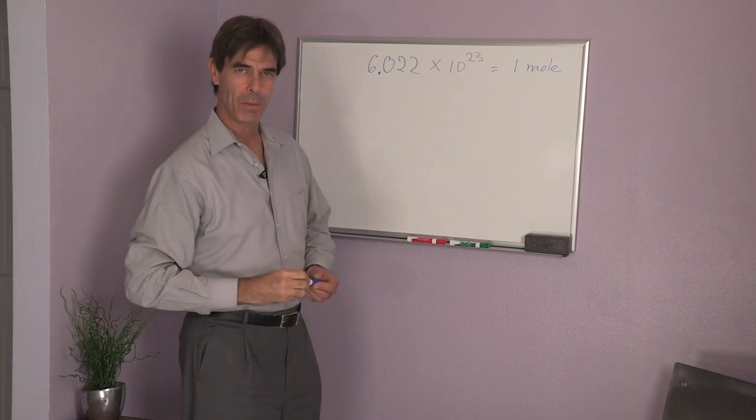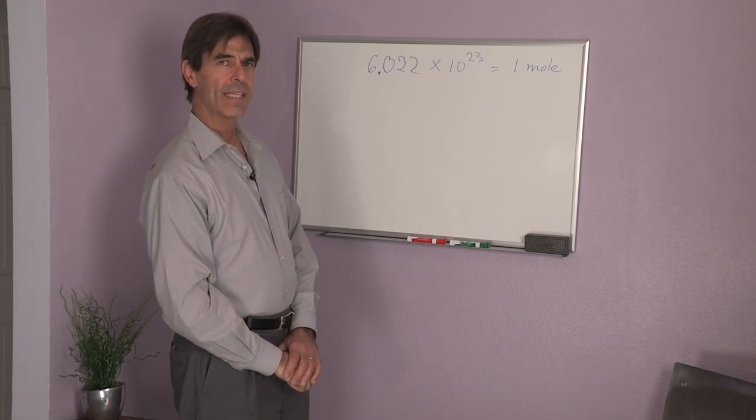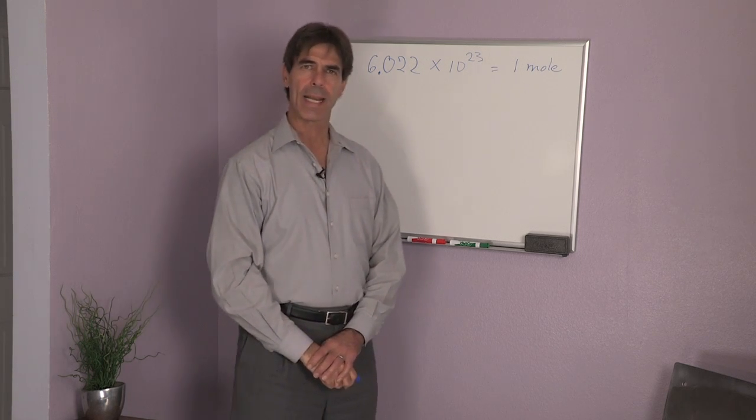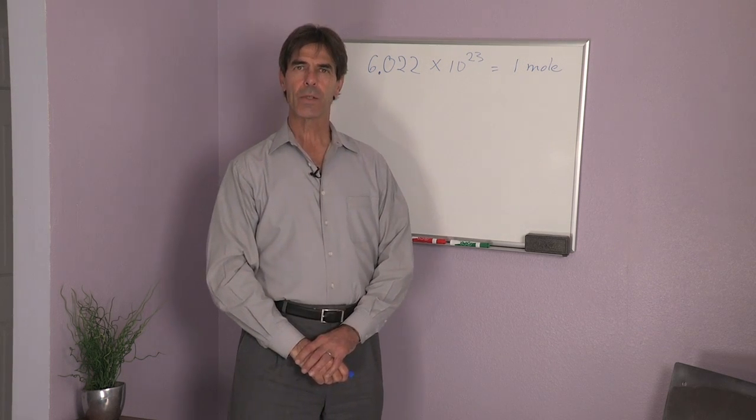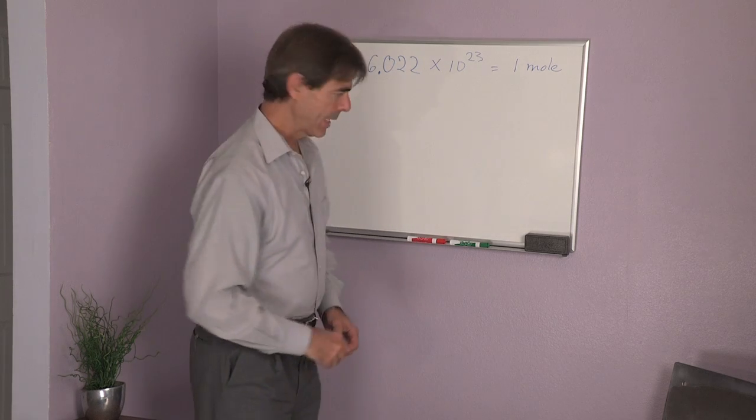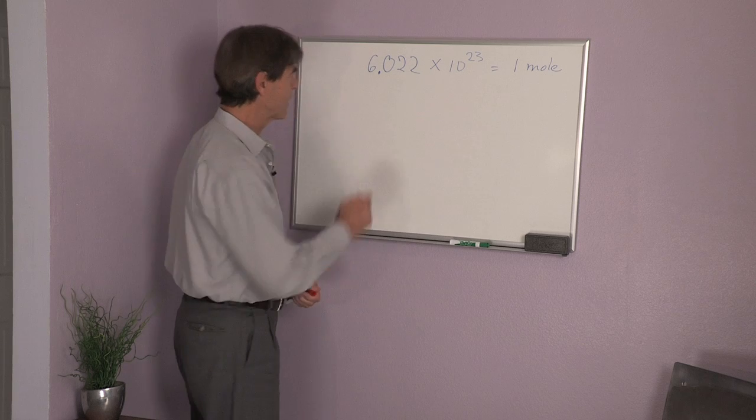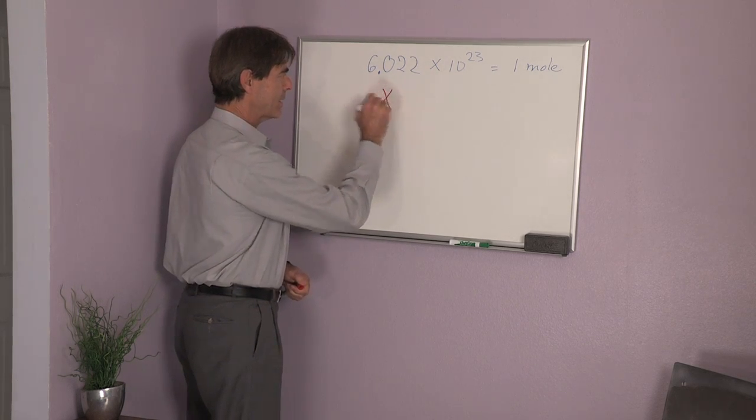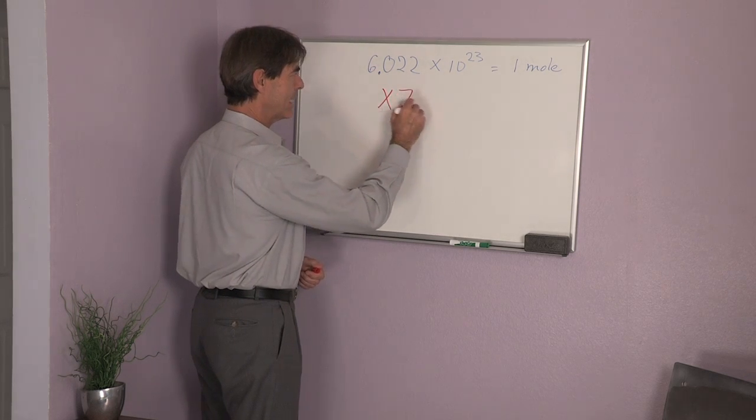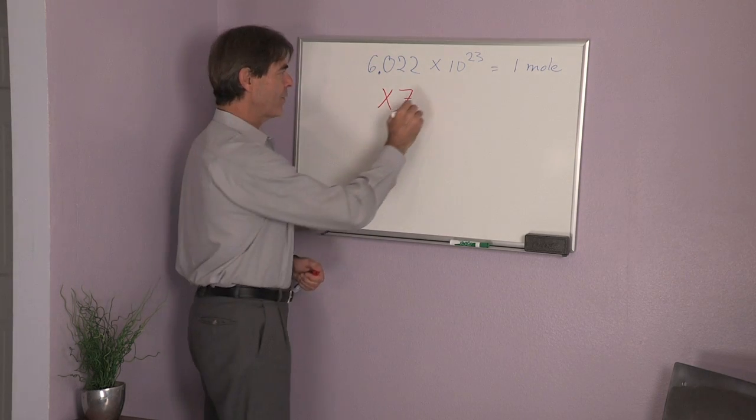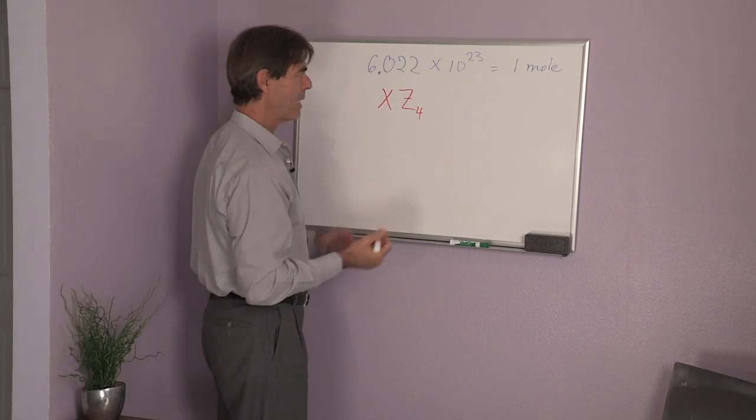One chemical mole. Now when we are talking about a component, what we are thinking of is an atom or a molecule, and we use the chemical formula to describe that. Let's talk about some substance. It has X in it, and it has some Z in it. It might have four Z's in it, and it has maybe a Q.